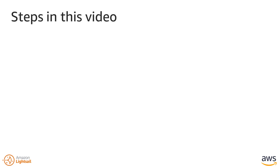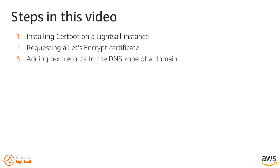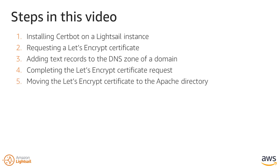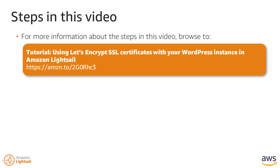The steps covered in this video include installing CertBot on the LightSail instance, requesting a Let's Encrypt certificate, adding text records to the DNS zone of a domain, completing the Let's Encrypt certificate request, moving the Let's Encrypt certificate to the Apache directory, and integrating the Let's Encrypt certificate with the WordPress website using the Really Simple SSL plugin. These steps are also covered in the LightSail documentation at the address shown on the screen.